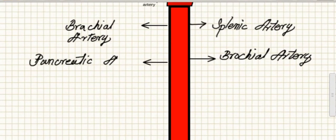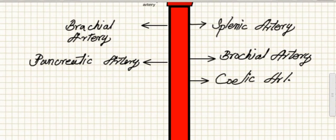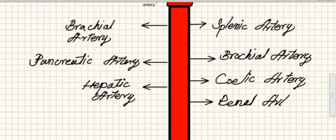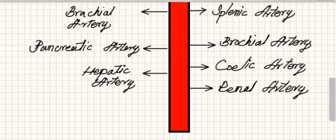Pancreatic artery supplies blood to pancreas. Colic artery supplies blood to colon. Hepatic artery supplies blood to liver. Renal artery supplies blood to kidneys.